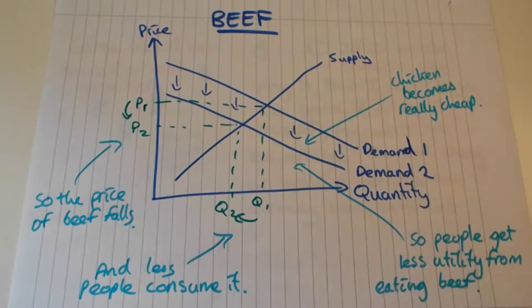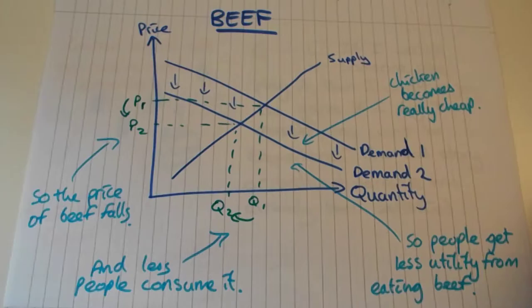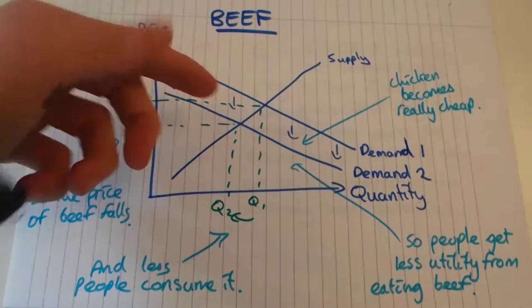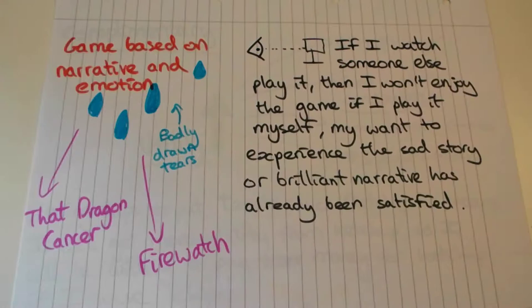If we look on a supply and demand diagram as to what's going on, we've got supply and demand for beef and we've got the scenario where chicken becomes really cheap. What this means is that people are getting less utility from eating beef because they're buying more chicken because it's become cheaper. This shift in the demand curve leads to a new market equilibrium causing the price of beef to fall and less people consume it, which isn't very good for the market of beef.